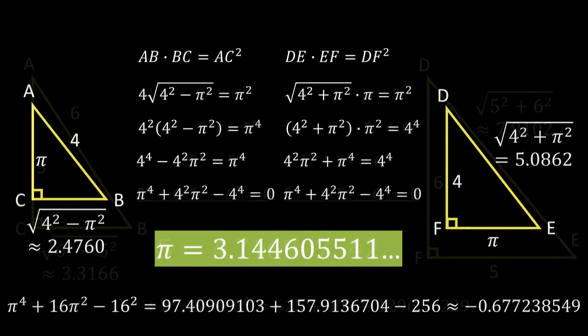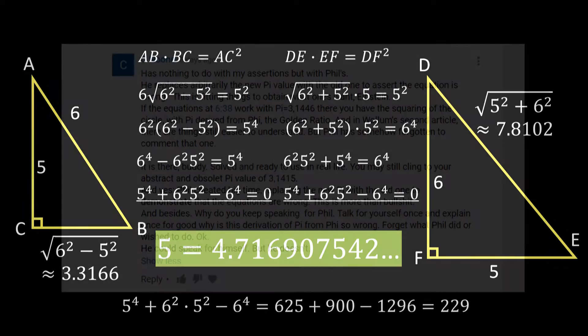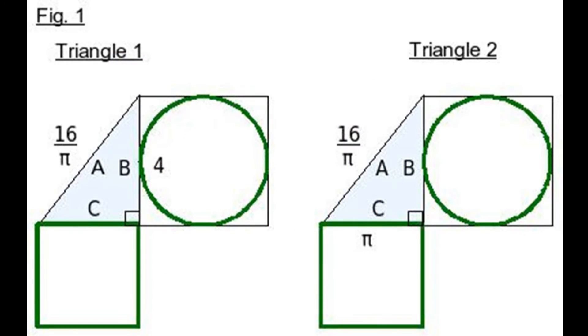I even demonstrated using triangles that are clearly not Kepler triangles that you can force any triangle to pass Wolham's side length test by changing known constants. But somehow C Noone didn't get it, so I'm guessing that he won't get this video either.